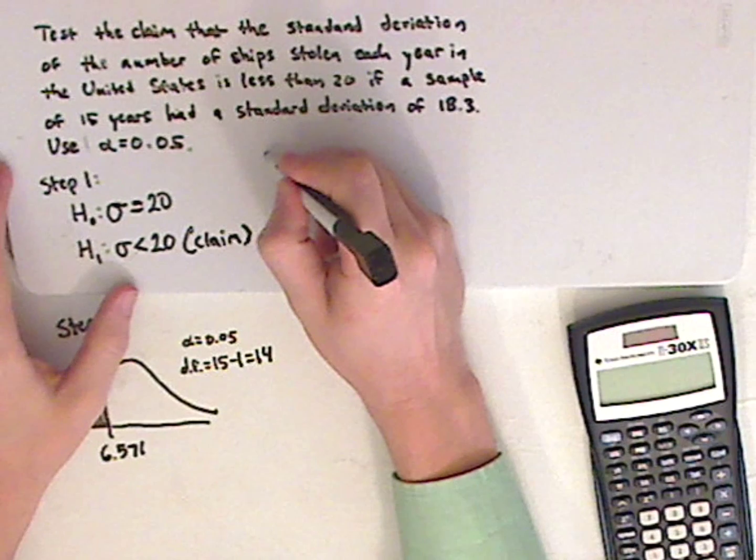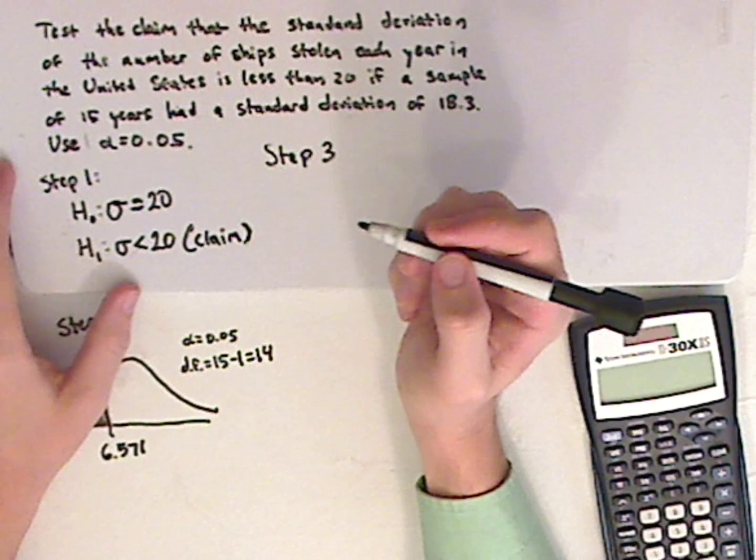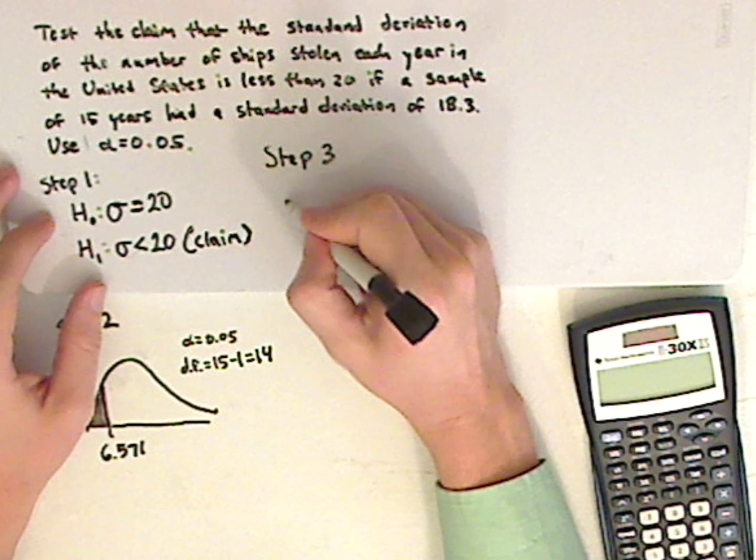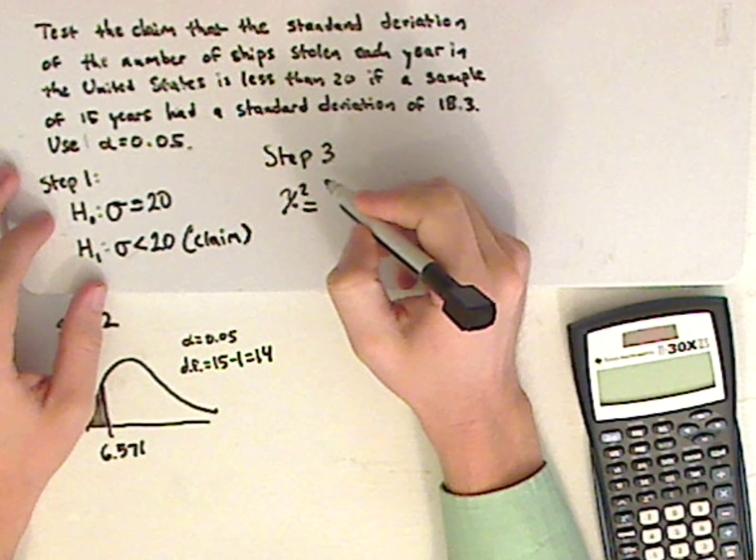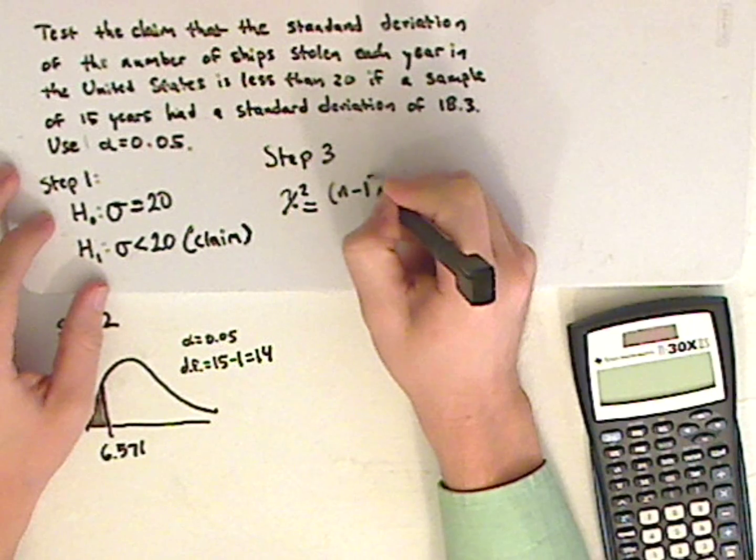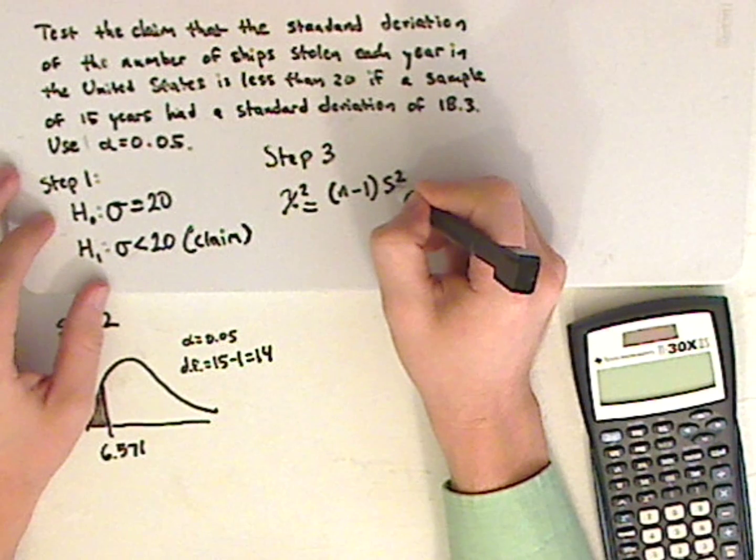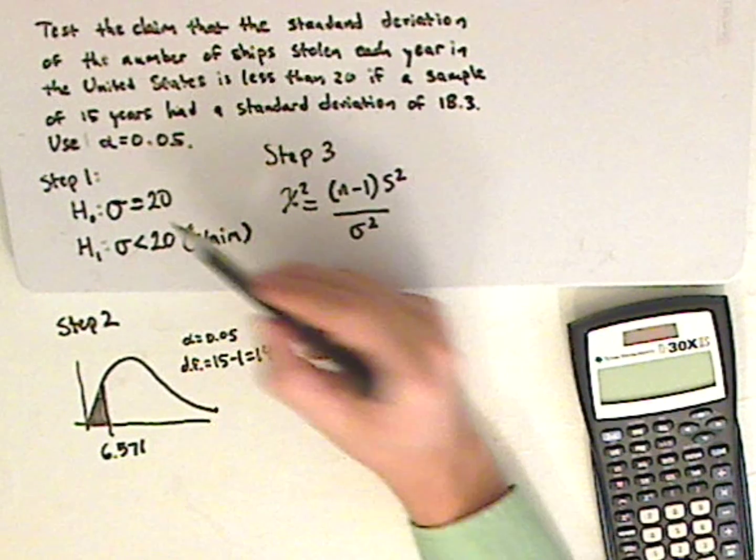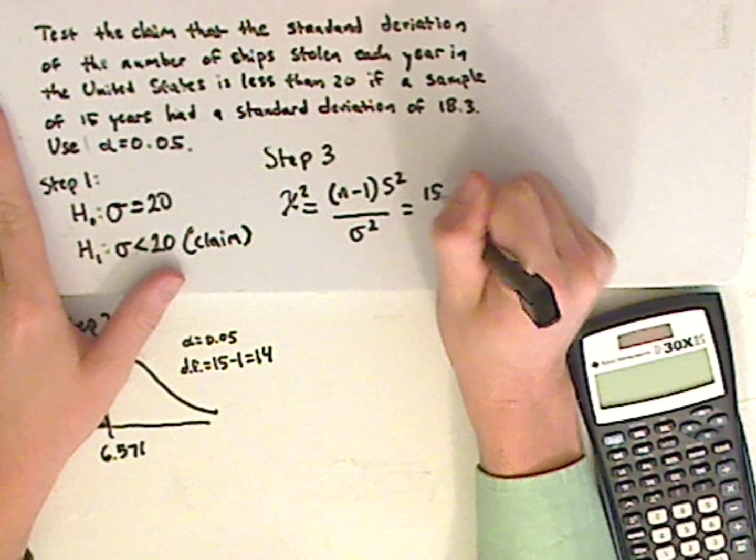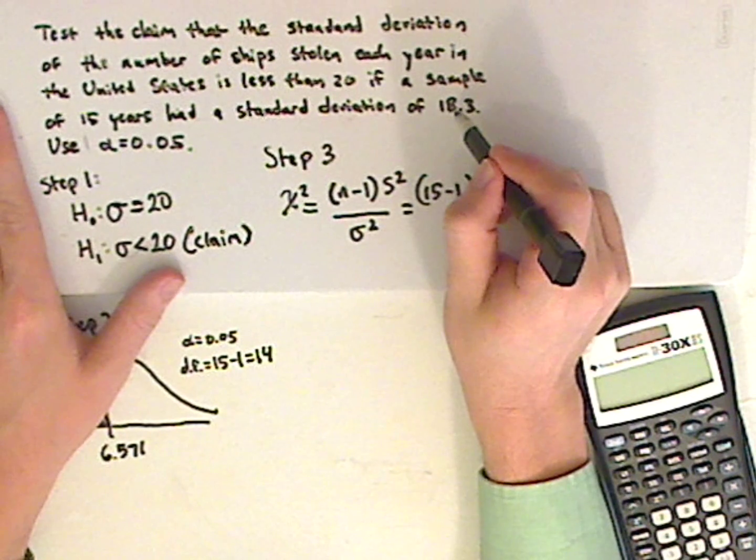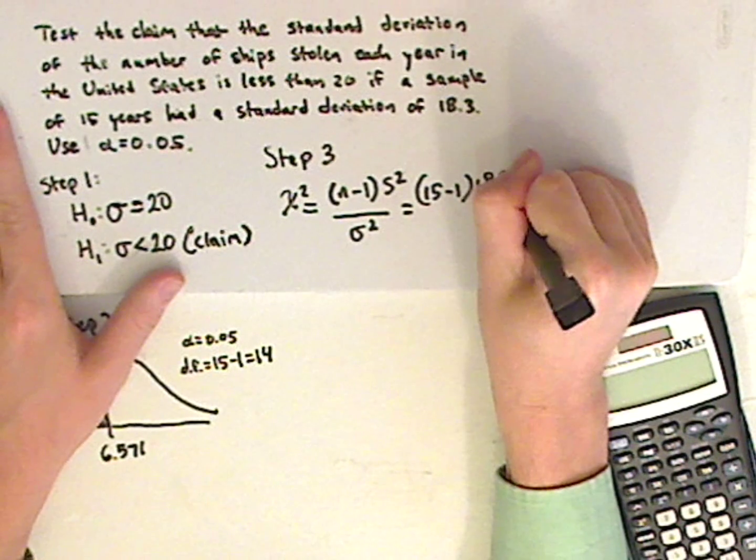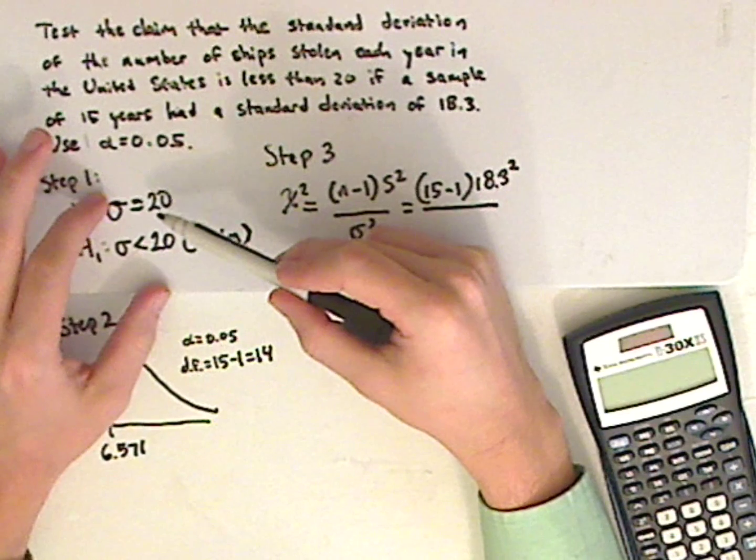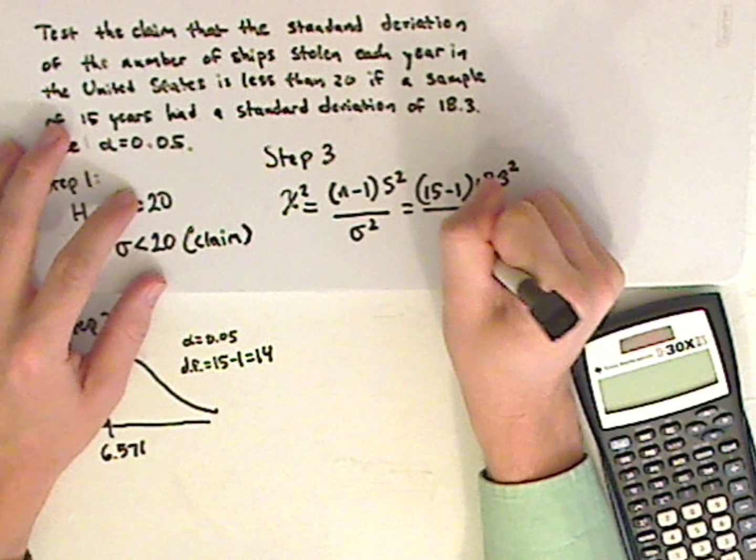Step number three is you have your test statistic. Here, since you're dealing with standard deviation or variance of one sample, you're going to use chi-squared. And for standard deviation or variance, it looks like this: chi-squared equals (n-1) times s-squared, that's the standard deviation of the sample, over sigma-squared, which would be this right here. So just substitute everything in. So that's 15 minus 1 times the standard deviation of the sample that you're looking at is 18.3, and you're going to square that over, you're assuming that this is the standard deviation of the population, that's what you're testing it against. So that would be 20 squared.